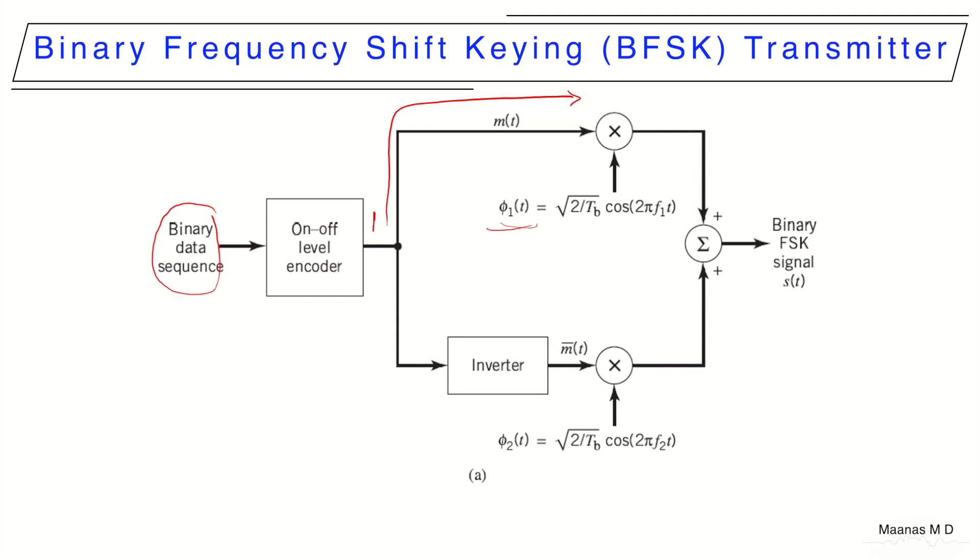Let's take the example for the symbol being 0. As the symbol transmits through the upper channel, it multiplies with the basis function phi1 and it becomes 0. When the same symbol goes into the inverter, it becomes 1.